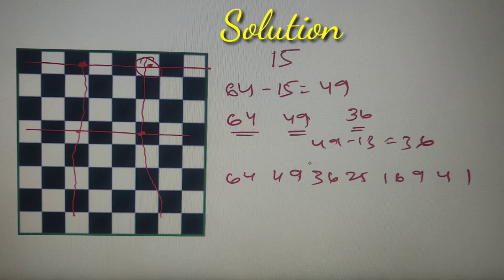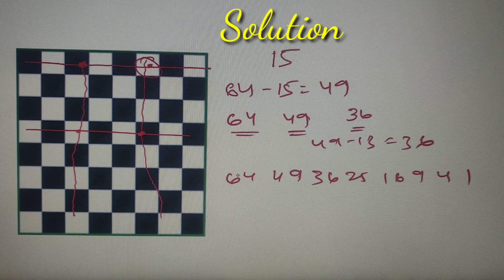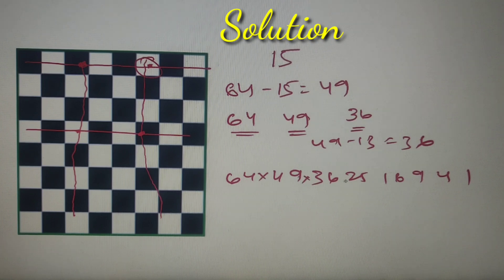Now since the event is completed when all the 8 rooks are placed on the chessboard, so I will use the multiplication theorem and multiply all these numbers. So the total number of ways in which all of them can be placed on the chessboard is 64 into 49 into 36 all the way up to 1.